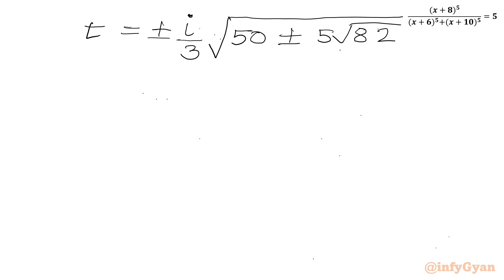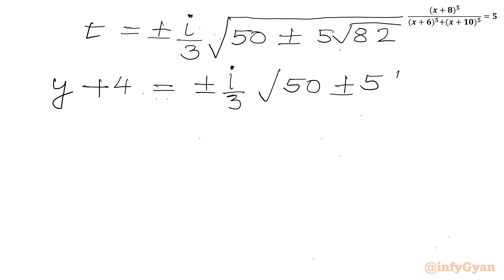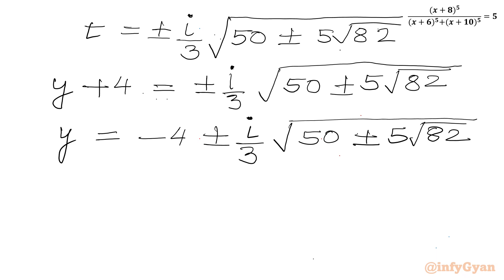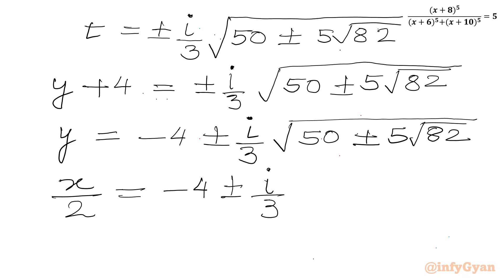Now, t was y+4, so y+4 equals plus or minus i over 3 times square root of (50 plus or minus 5 square root 82). Subtracting 4 from both sides, we get y equal to minus 4 plus or minus i over 3 times square root of (50 plus or minus 5 square root 82). Now y was x over 2, so x over 2 equals minus 4 plus or minus i over 3 times square root of (50 plus or minus 5 square root 82). Multiplying both sides by 2, x equals minus 8 plus or minus 2i over 3 times square root of (50 plus or minus 5 square root 82). Overall we have 4 solutions.